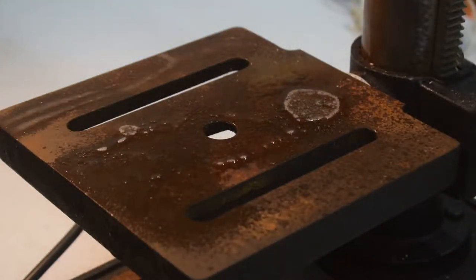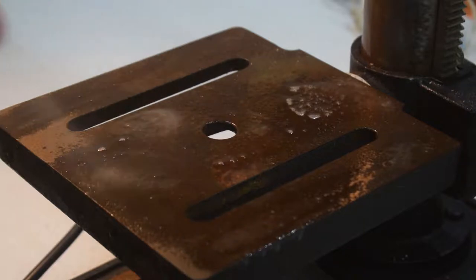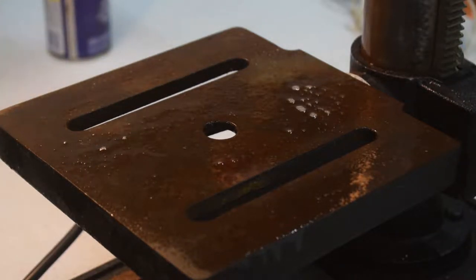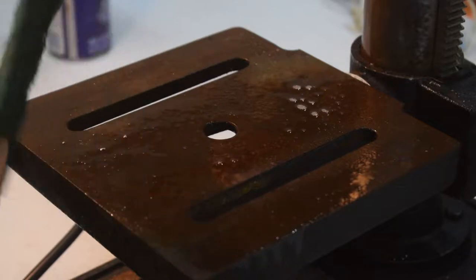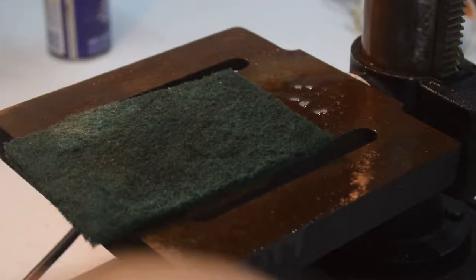With cast iron parts there's multiple ways that you can go. You can use sandpaper directly on it, but eventually it will get down into the cast iron and change the surface of it.